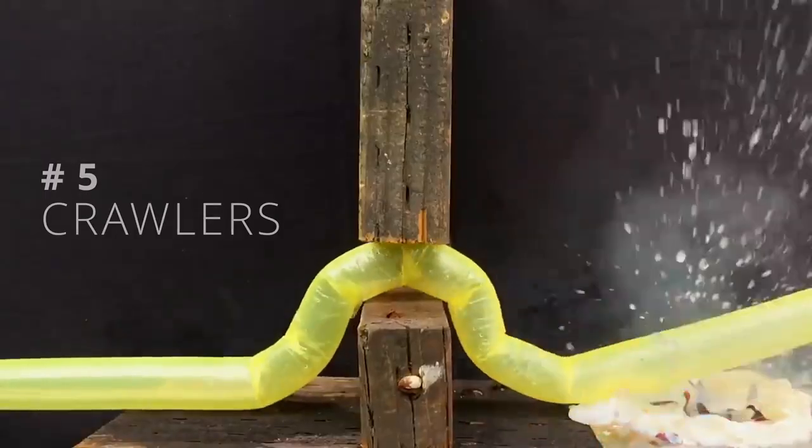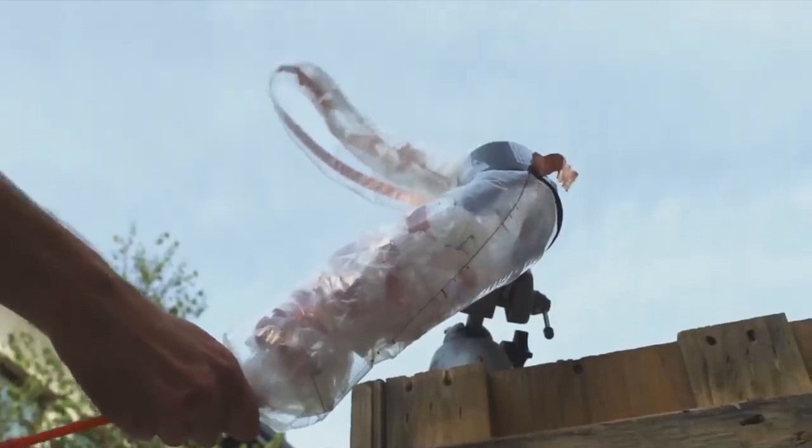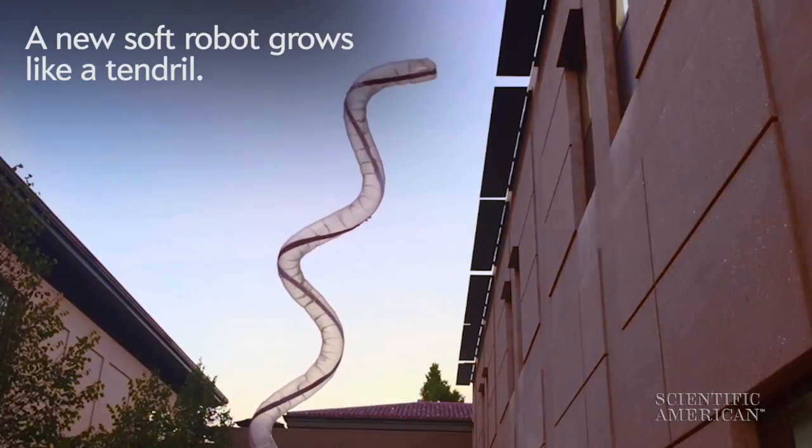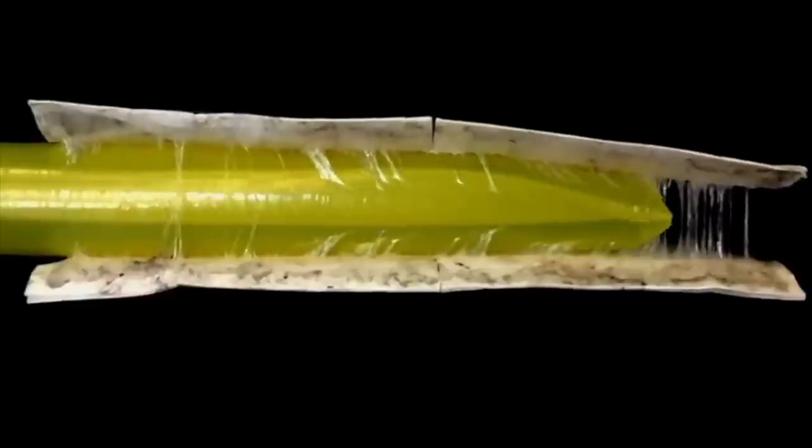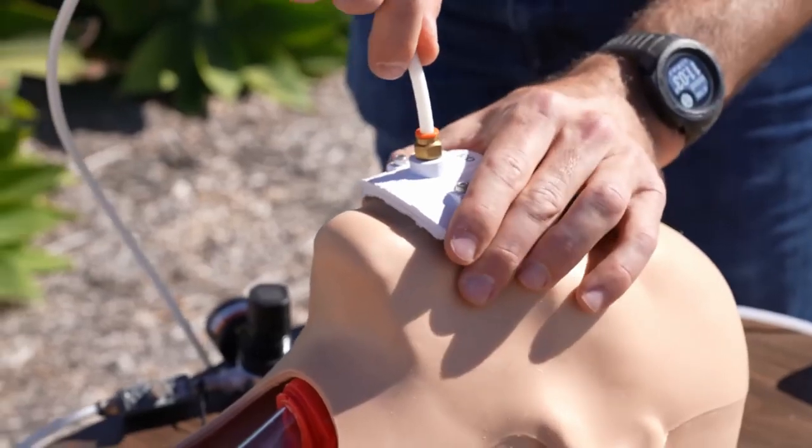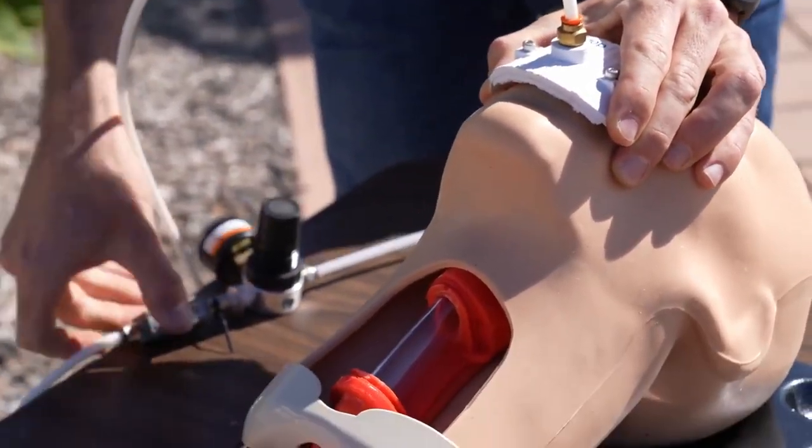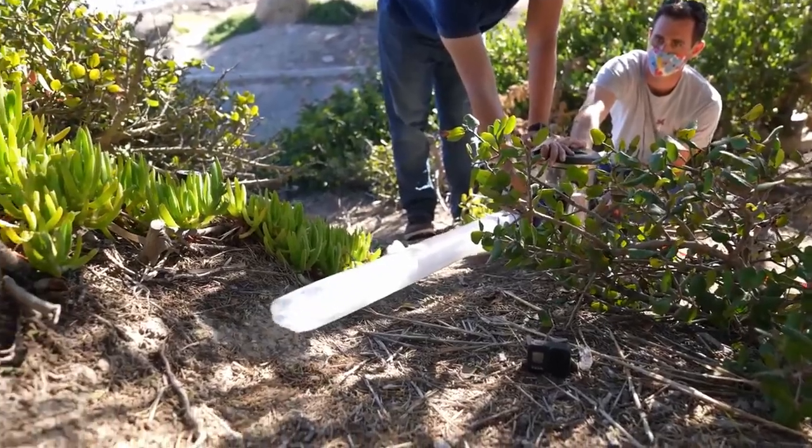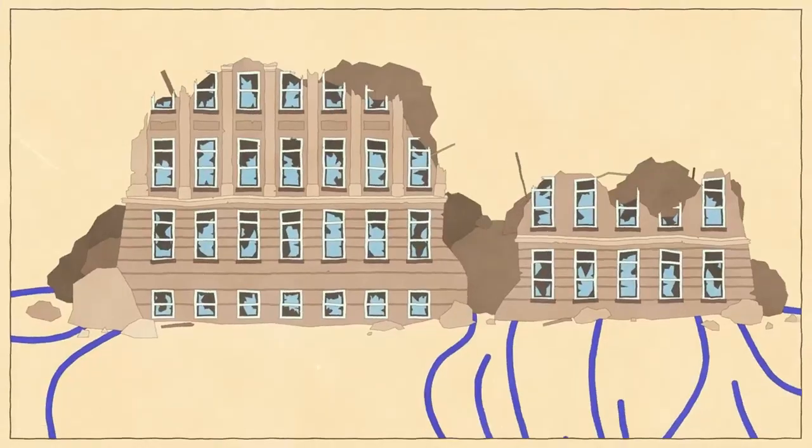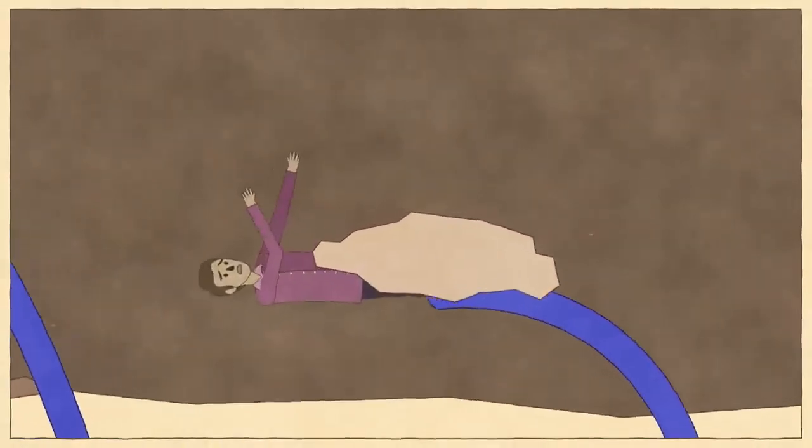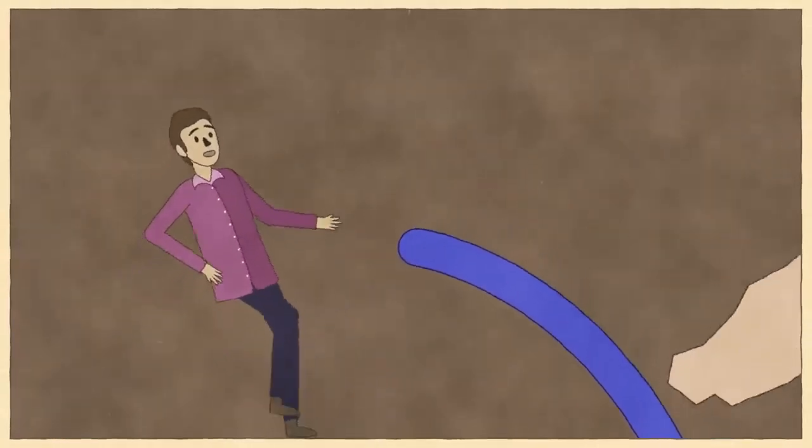Number 5: Crawlers. This soft robot can grow up to hundreds of times its size and it cannot be stopped by adhesives or spikes. It has many applications and some can even involve saving our life. It grows from the tip thanks to compressed air, and thanks to the pressure it can lift really heavy objects, allowing it to be potentially used in rescue operations after a building has fallen.